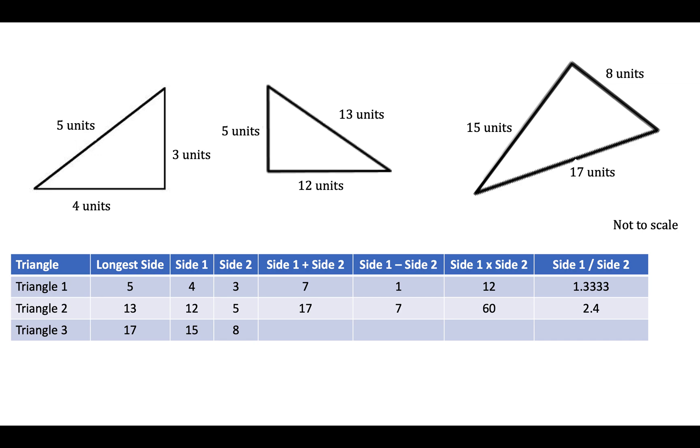Still not really seeing anything but we'll look at triangle three anyway. We get 23 for adding, 7 for subtracting, 120 for multiplying, and 1.875 for dividing. With the exception of a few 7s, there isn't much relationship here.